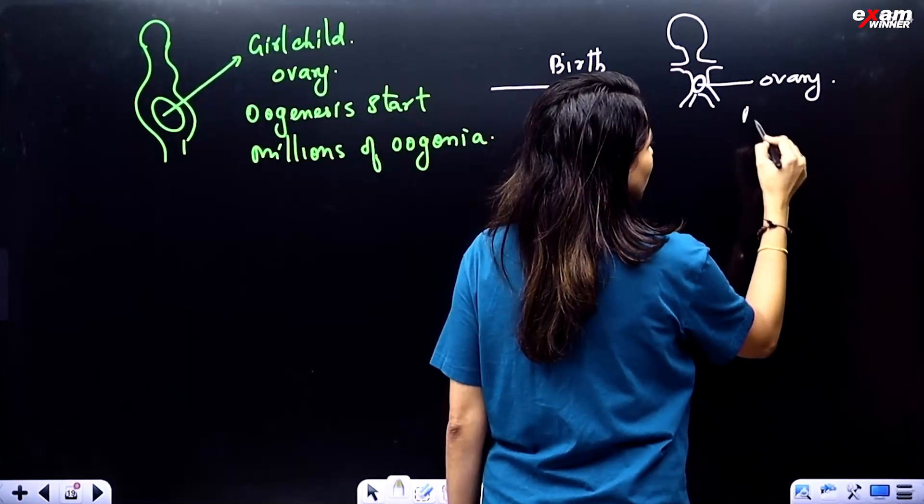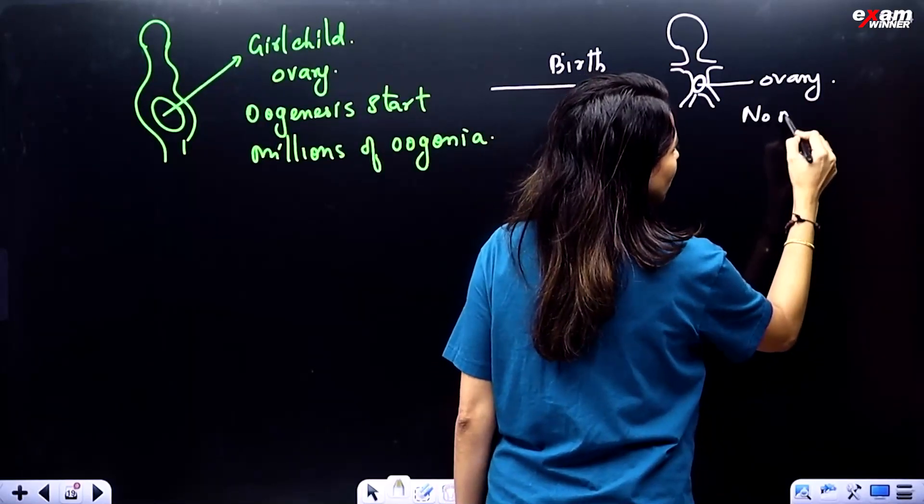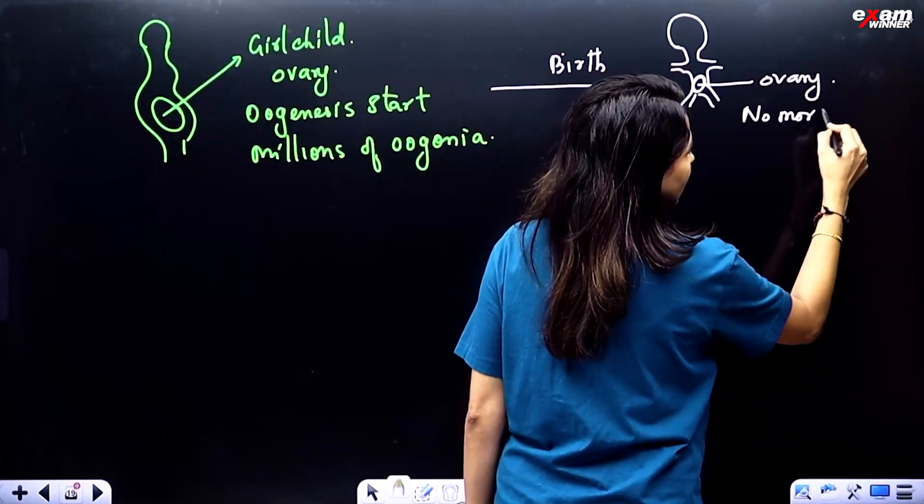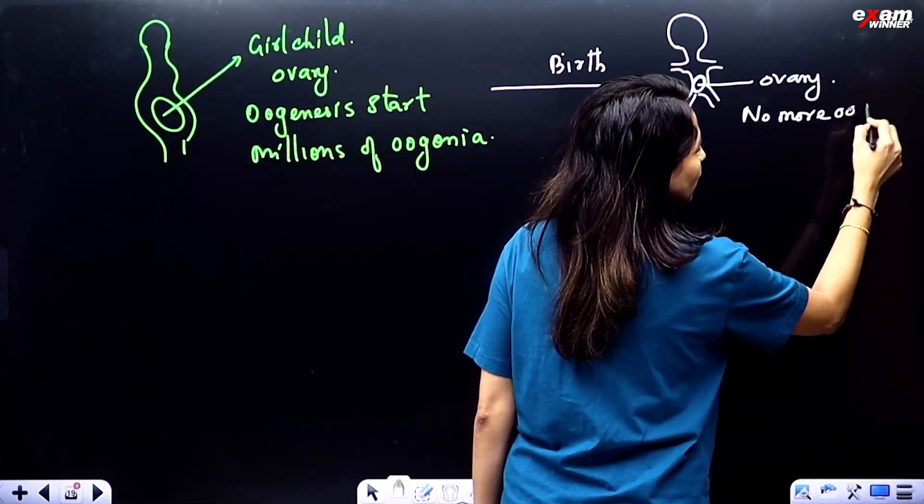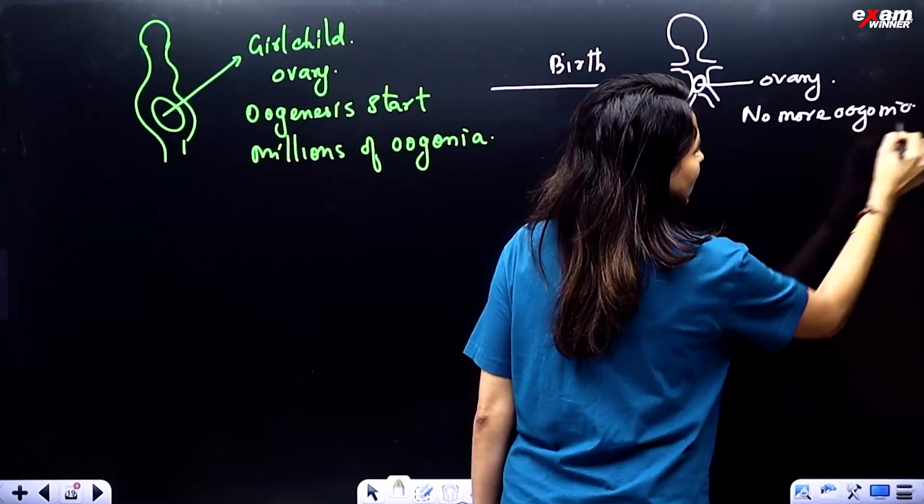After birth, no more oogonia are added. The girl is born with a fixed number of oogonia.